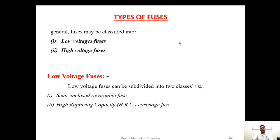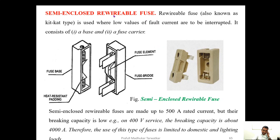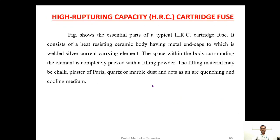There are basically two types of fuses used in electrical protection circuits: low-voltage fuses and high-voltage fuses. Low-voltage fuses are semi-enclosed re-wireable fuses, also called KitKat fuses. The KitKat fuse consists of a base and a carrier; the carrier holds the fuse element between two contacts. These fuses are used up to 500 amperes, 400 volts capacity.